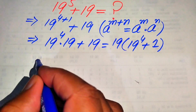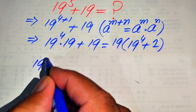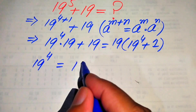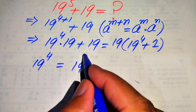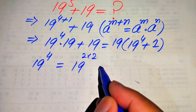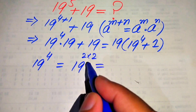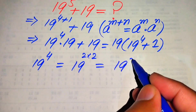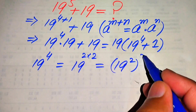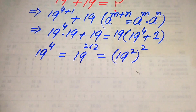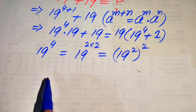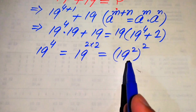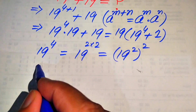To find the value of 19 to the power of 4, we break it as 19 to the power of 2 multiplied by 2, and move the 2 inside the term so it becomes 19 squared, whole squared. So first we need to find the square of 19.